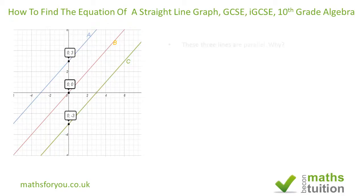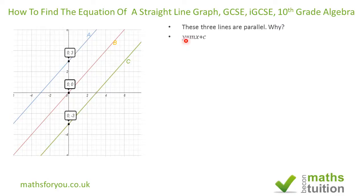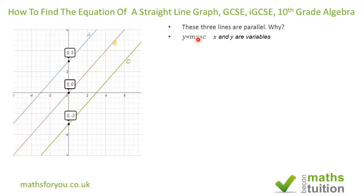They look parallel to me, and the reason why they're parallel is because they have the same gradient. The gradient appears in the formula y = mx + c — sometimes written as y = mx + b or y = mx + a. The x and y are variables: x is the independent variable and y is the dependent variable, so the value of y depends on the value of x.